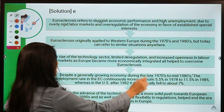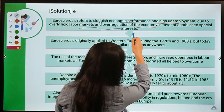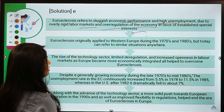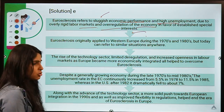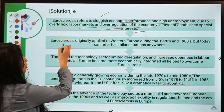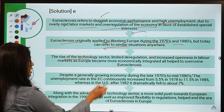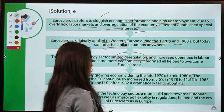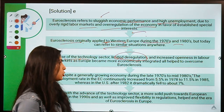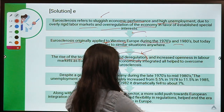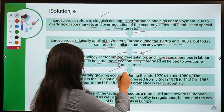Eurosclerosis refers to sluggish economic performance and high unemployment due to overly rigid markets and over-regulation of the economy in favor of established special interests. There is some growth but it is sluggish and unemployment is still high. Originally applied to Western Europe during the 1970s and 80s, today it can refer to similar situations everywhere. Rise of the technology sector and limited deregulation — where government has been keeping things under its control and not letting the private sector develop too much — can also lead to high rates of unemployment.